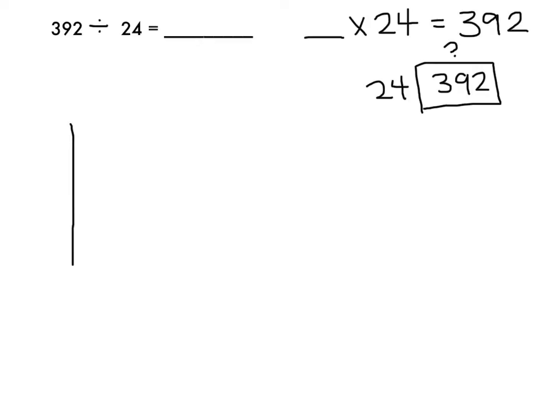Thinking about that, I'm going to create a larger rectangle with one dimension being 24. I'm going to think about what can I multiply times 24 to get me close to 392. Well, I know that 24 times 10 would be 240, so that's a good place to start. 24 times 10 equals 240.